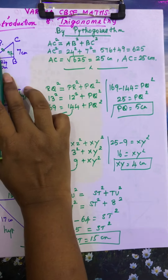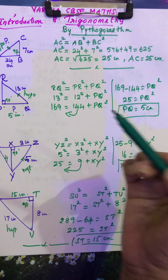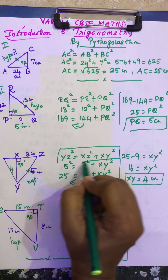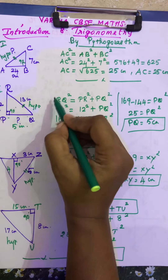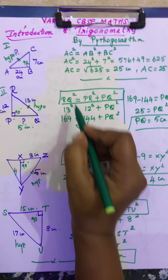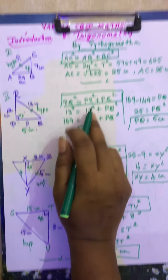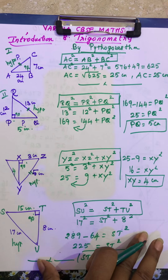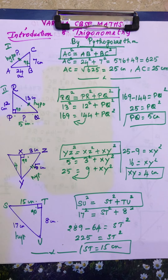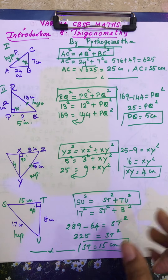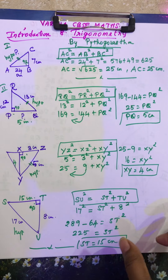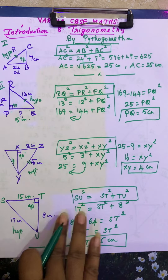In some triangles the hypotenuse was not given; in others, one of the other sides was not given. This is the basic thing — writing the Pythagoras theorem correctly for each triangle. If you write the theorem correctly, you will get the right answer; if not, you will get the wrong answer. This is very important. If you know the basic concepts of the Pythagoras theorem and triangles, the trigonometry lesson will be easier to learn. I hope you all understand — please do it on your own after watching this video. If you liked this video, please give a like and subscribe to the channel. Thank you.